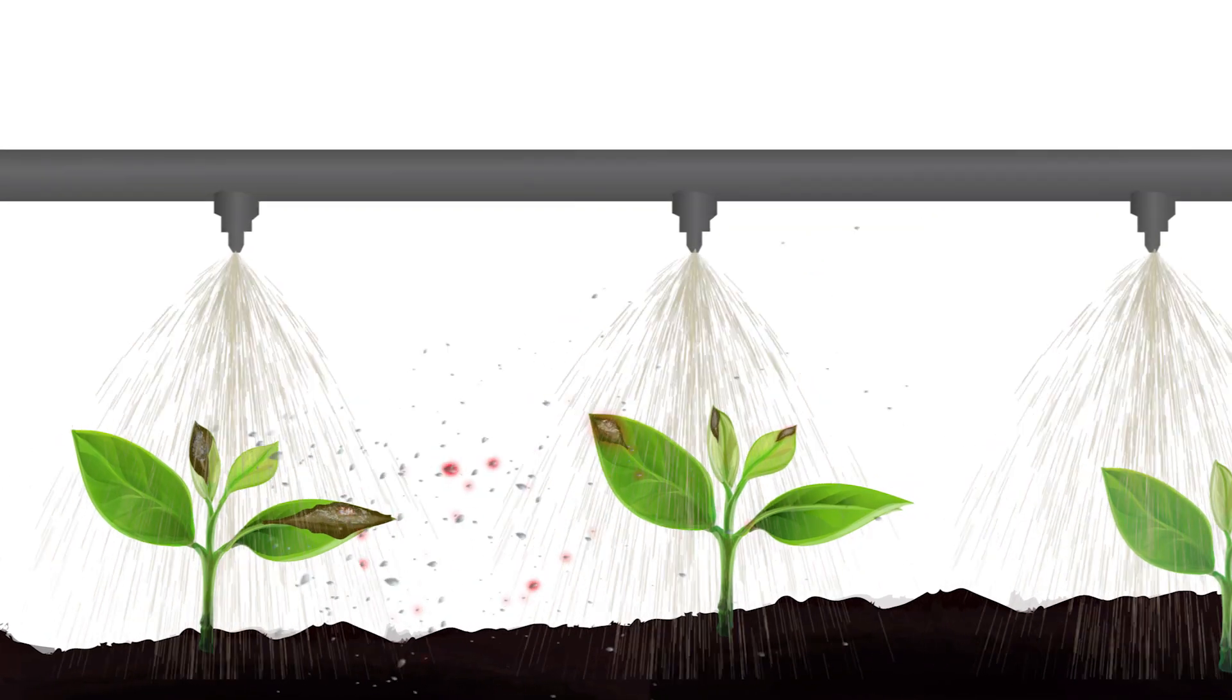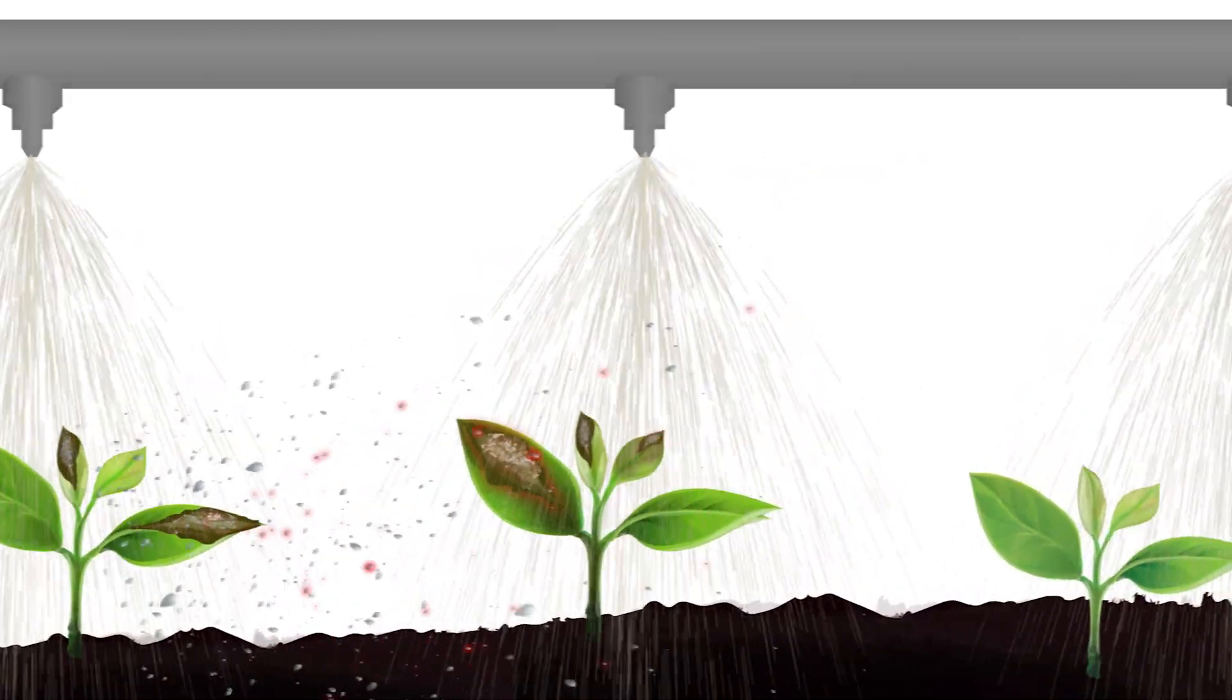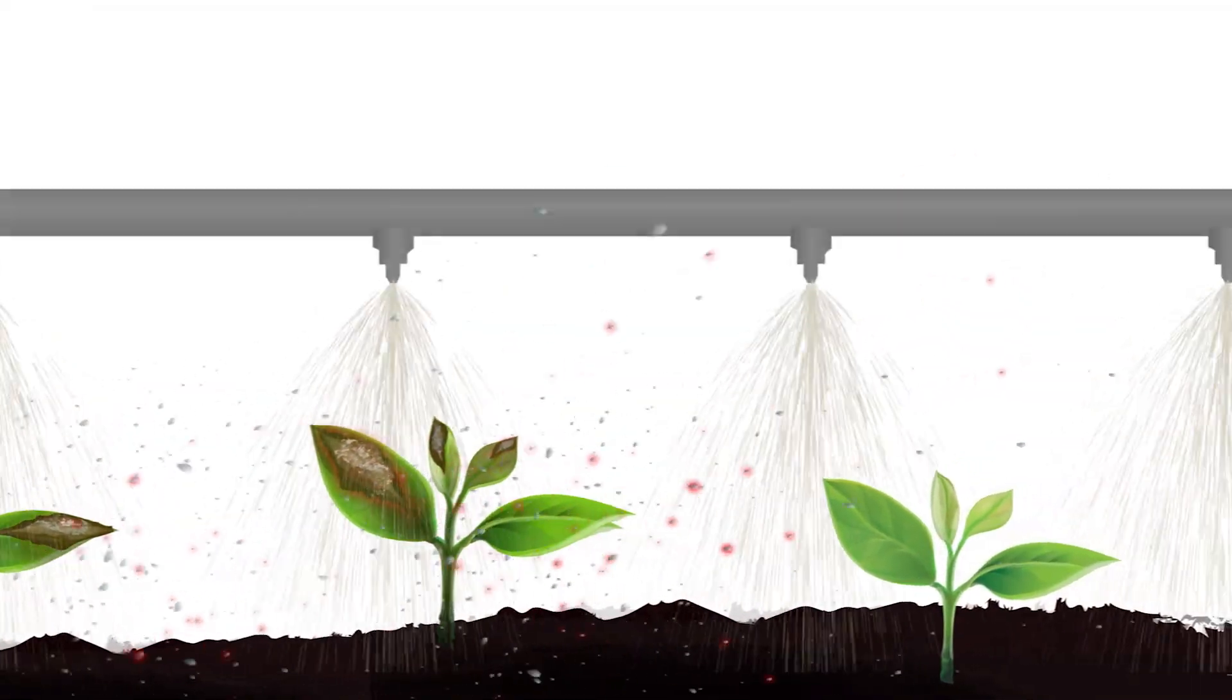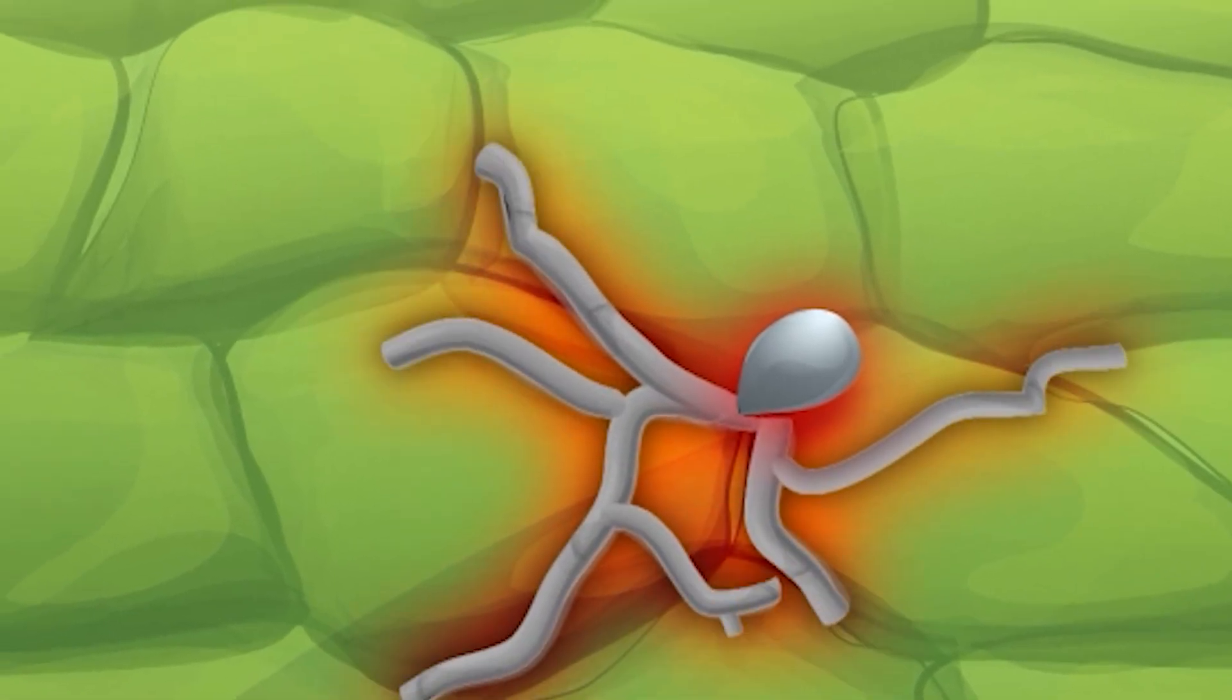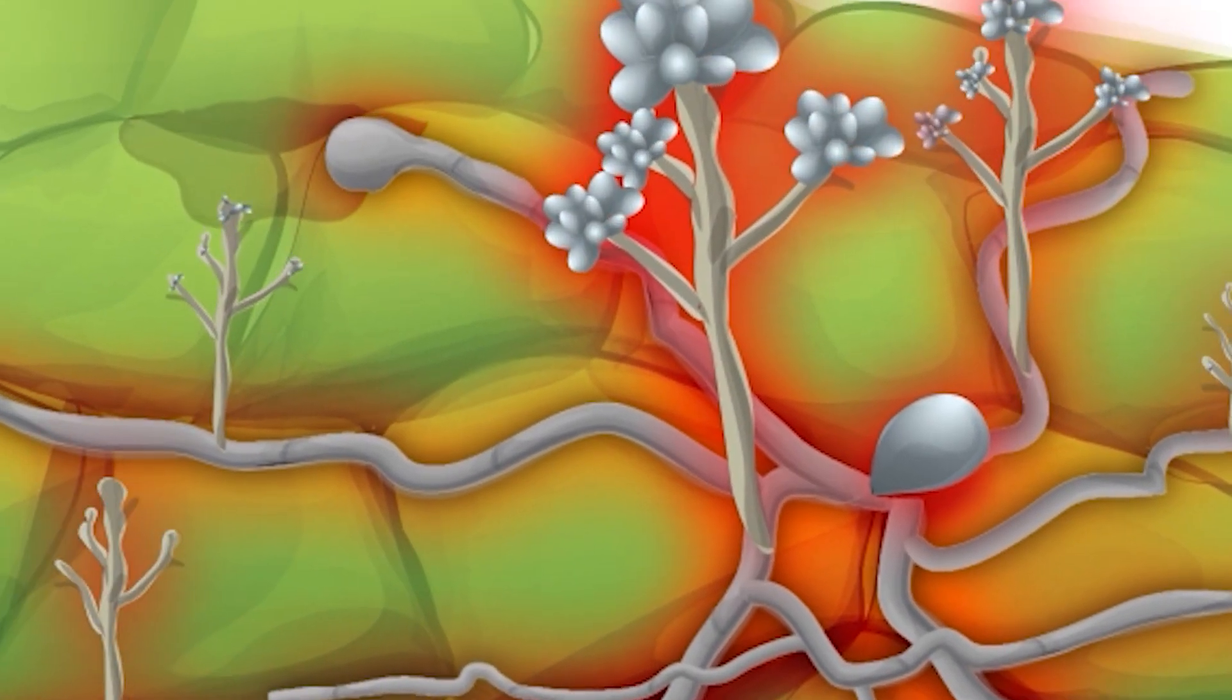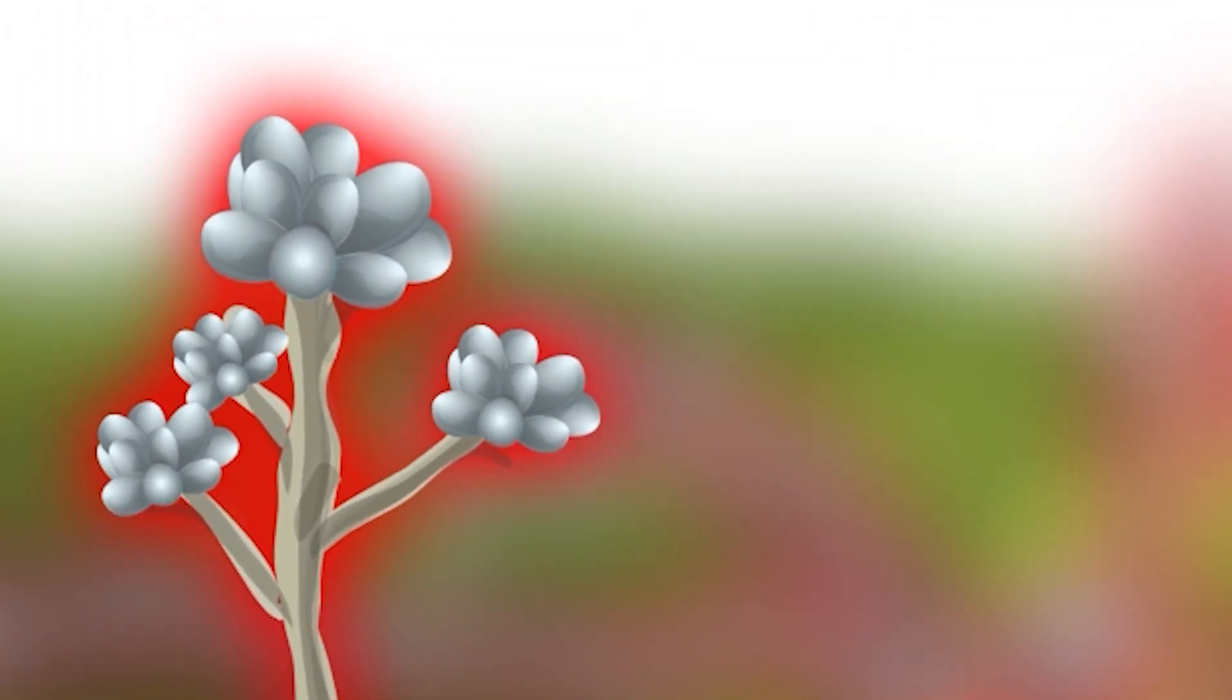Unfortunately, each time this fungicide is sprayed, normal spores will die, but resistant spores will survive and reproduce. Eventually, resistance will take over the field, and the fungicide can no longer control the disease.